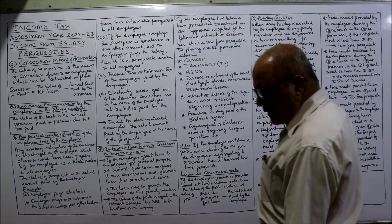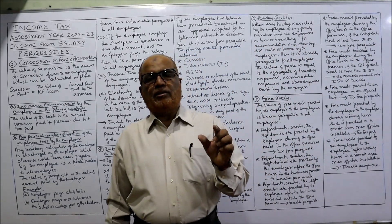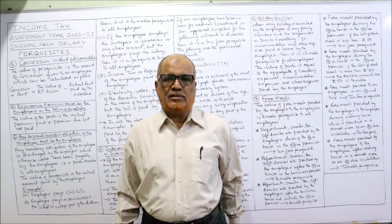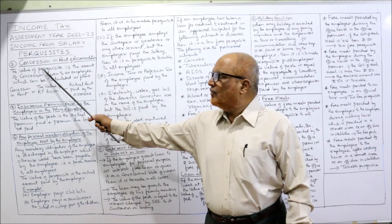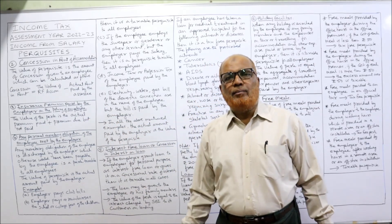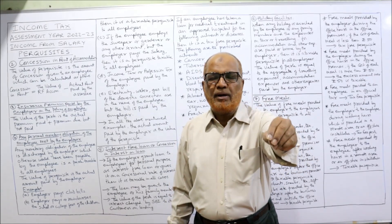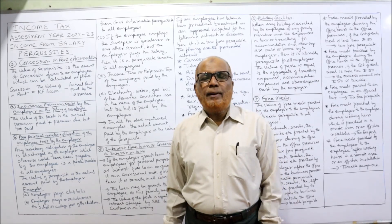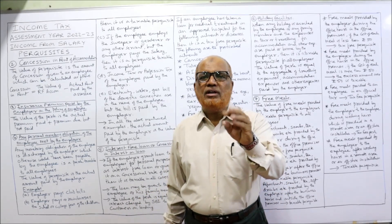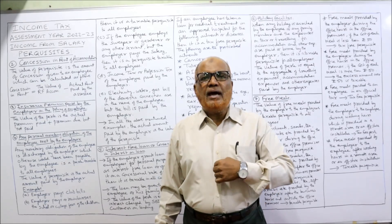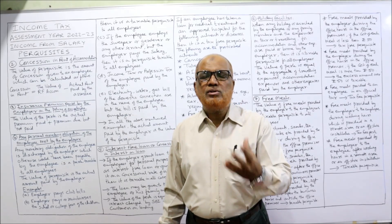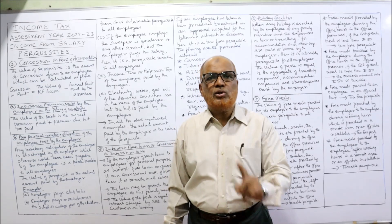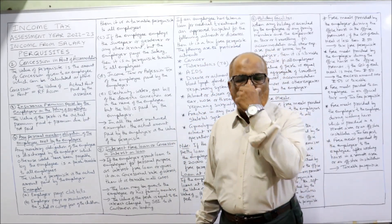We have discussed the first perquisite — rent-free accommodation. Remember, we are discussing perquisites taxable to all employees. The second one is concession in rent of accommodation. Sometimes the employer gives accommodation to the employee not free of rent but at a concessional rent. For example, if the rental value of the flat is 40,000 rupees per month but the employer charges only 5,000 rupees per month, the employee is getting a concession in rent — that is also a taxable perquisite in the hands of all employees.